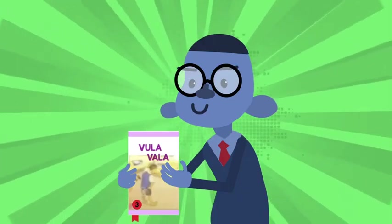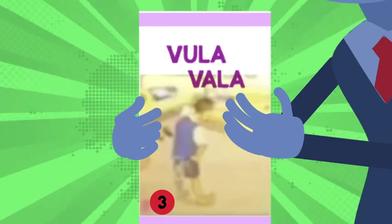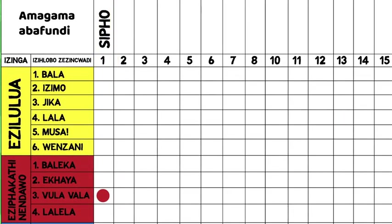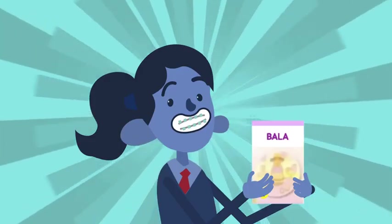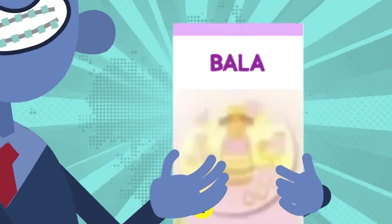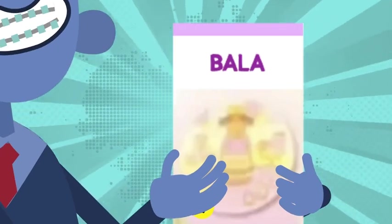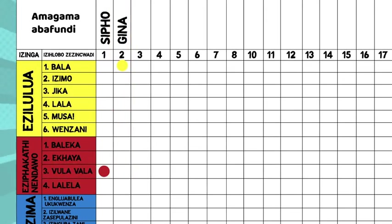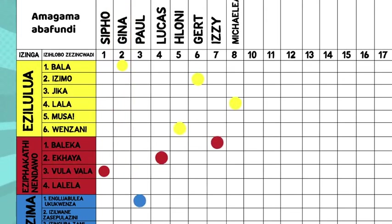If Sipo is taking out a book called Vula Vala, which has a red sticker, you put a red sticker on the chart next to the title of the book under Sipo's name. If Gina is taking out a book called Vala, which has a yellow sticker, you put a yellow sticker on the chart next to the title of the book under Gina's name and so on.